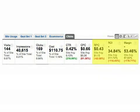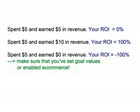Revenue per click, return on investment, and margin can help you assess keyword profitability. ROI is useful because it provides a single metric comparison of how much you spent versus how much you made. An ROI of 0% means you earned in revenue the same amount you spent. An ROI of 100% means you spent X and received 2X in revenue. If your RPC numbers are all zero and your ROI numbers are all minus 100%, it's because you have zero revenue, so make sure you've set goal values or enabled e-commerce tracking.